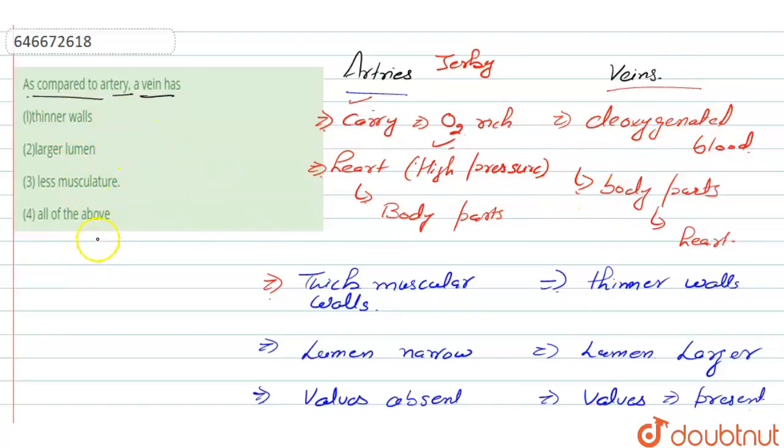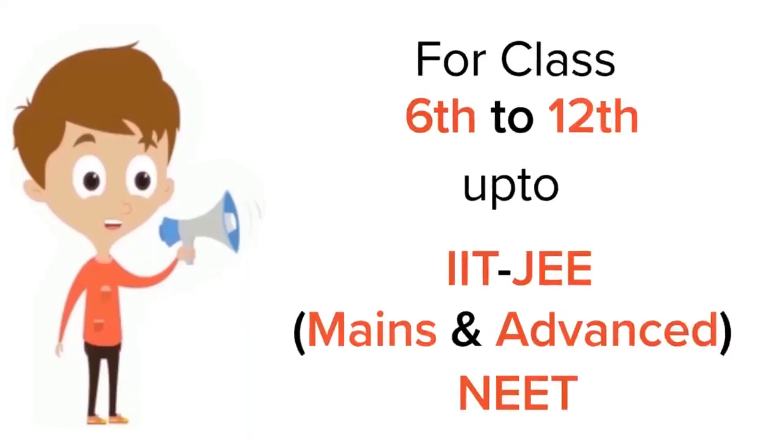If we talk about the options here: first is thinner walls - yes, veins contain thinner walls. Second is they contain larger lumen - yes, it has larger lumen. Third is they are less muscular - we have seen that arteries have thick muscular walls and veins have thin walls, which means veins are less muscular than arteries. So the right answer is option number four: all of the above. Thank you.